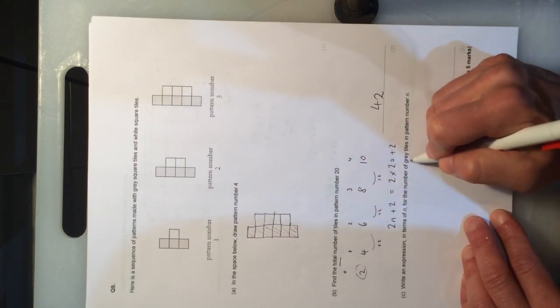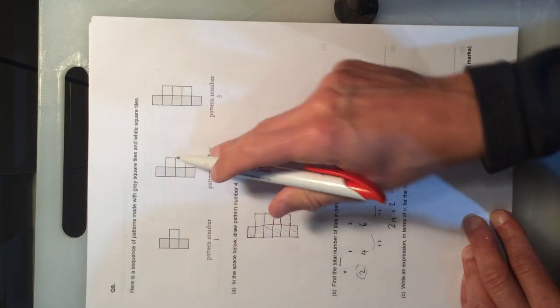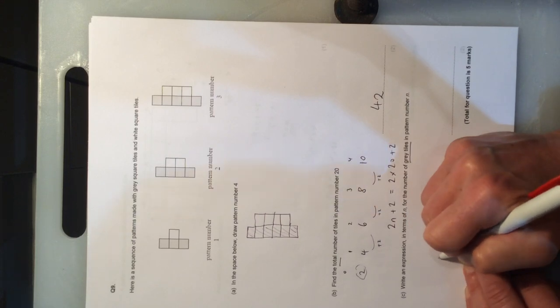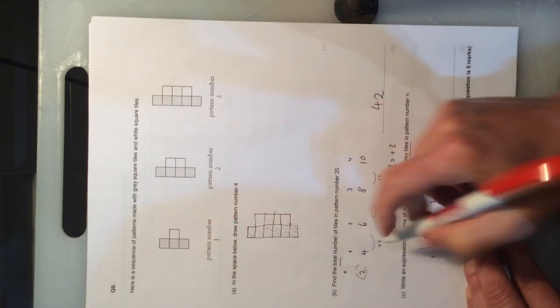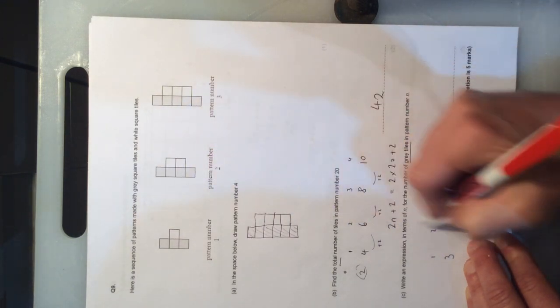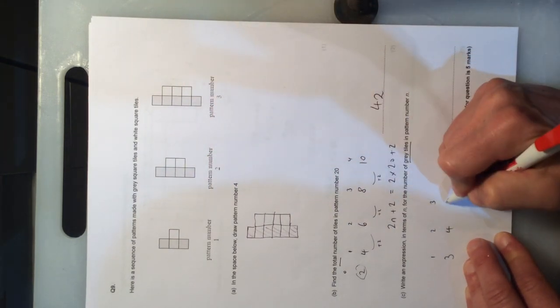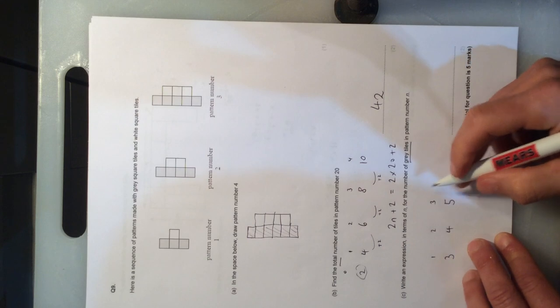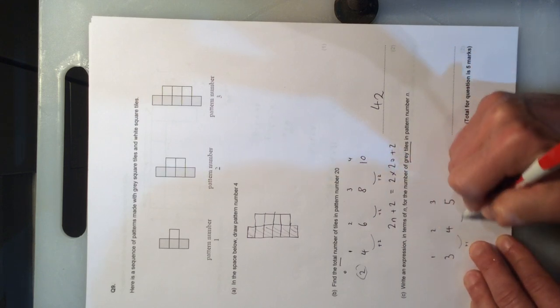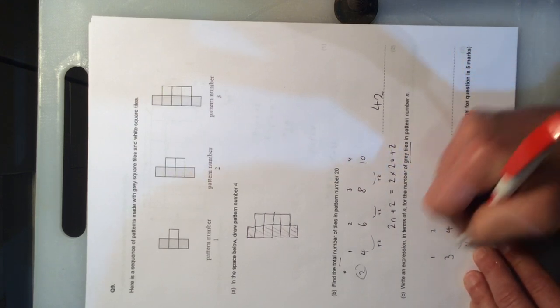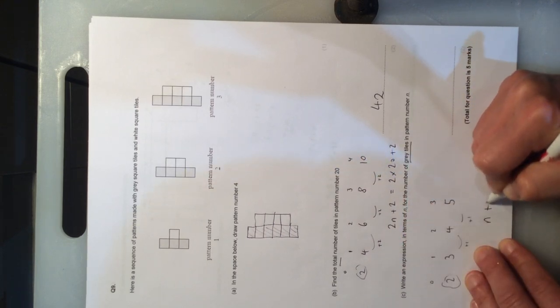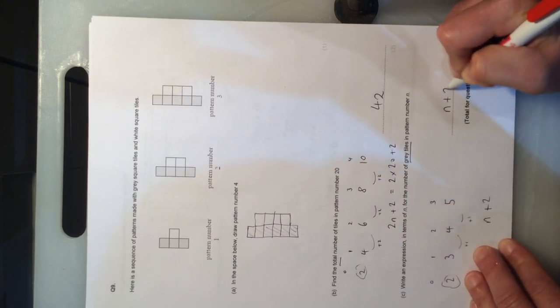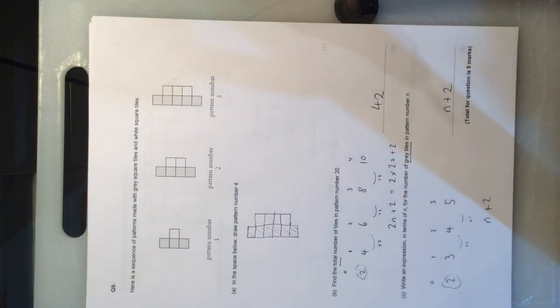Write an expression in terms of n for the number of grey tiles. Let's have a look at the grey tiles for these pattern numbers. For pattern number 1, we've got 3 tiles. Pattern number 2, 4 tiles. Pattern number 3, 5 grey tiles. This is going up in 1 each time, so it's kind of like just n. The ghost number is 2. So n add 2 would be the correct answer for that nth term of grey tiles.